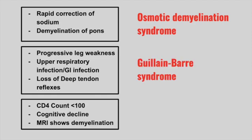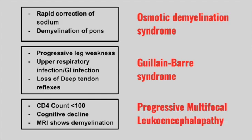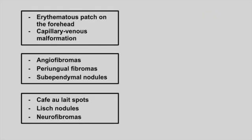Next is a patient with a CD4 count less than 100, cognitive decline, and the MRI is showing demyelination. This is progressive multifocal leukoencephalopathy, seen very commonly in HIV. Next is a patient who has a port-wine patch on the forehead and capillary venous malformations. This is Sturge-Weber syndrome.